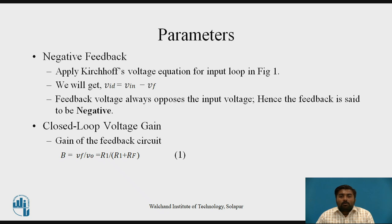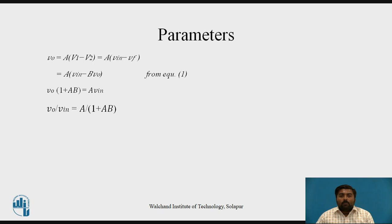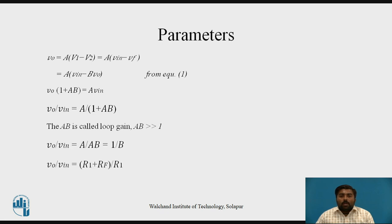The next parameter is the closed loop voltage gain, AF. To get the equation for AF, the feedback circuit equation gives beta equals to Vf upon Vo, which equals R1 upon R1 plus Rf. We have Vo equals A into V1 minus V2, where A is the open loop gain and V1, V2 are the two inputs. Substituting V1 = Vin and V2 = Vf, we write Vo equals A into Vin minus beta·Vo, giving Vo into 1 plus A·beta equals A into Vin, so Vo upon Vin equals A divided by 1 plus A·beta.